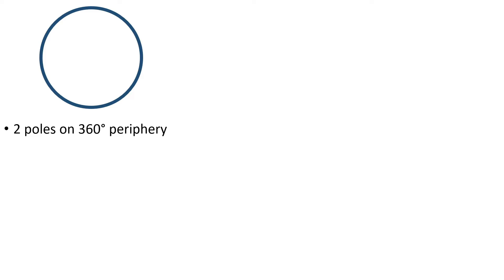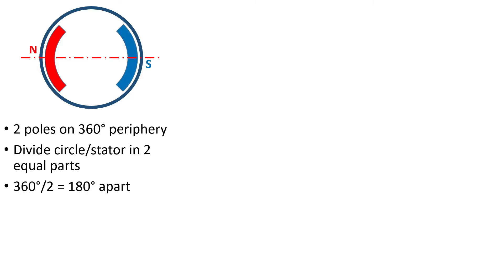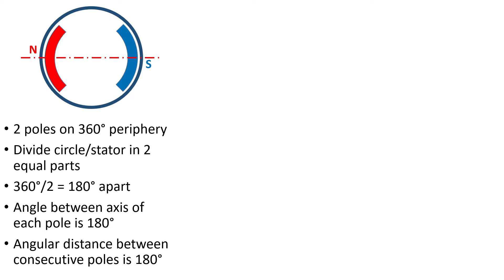Suppose this is a stator periphery and we want to build a machine with two poles. We need to fit two poles on a 360-degree periphery, so we divide the circular or cylindrical stator into two equal parts. We place the poles such that their axis center lies on the division — a north pole and a south pole. So the north and south poles are 180 degrees apart; the angular distance between two consecutive poles is 180 degrees.